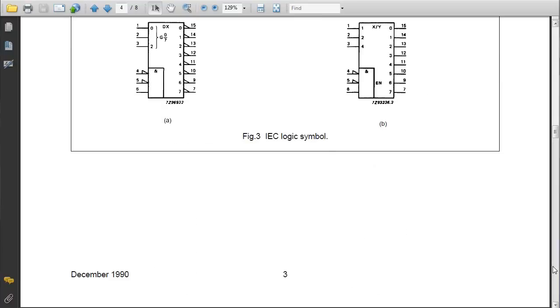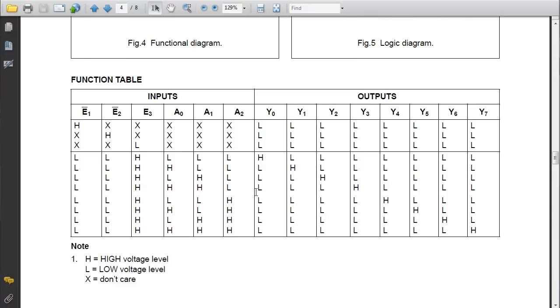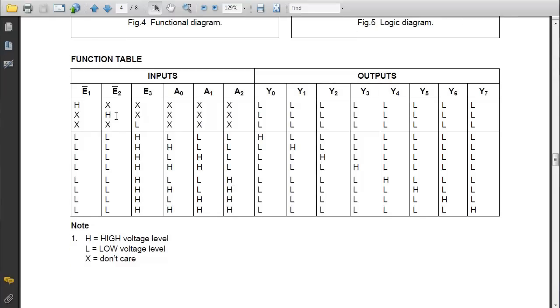Looking at the truth table, this is a good example of a function table. E1 is active low, so if E1 is high, it doesn't matter what the rest of the inputs are, all eight outputs will be low. Similarly, E2 is active low, so if E2 is high, it doesn't matter what E1 or the other inputs are, all the outputs will be low.